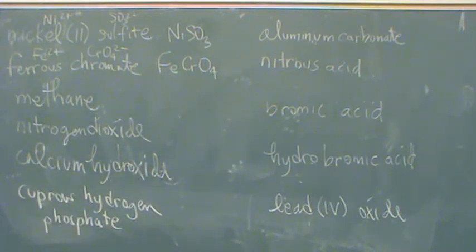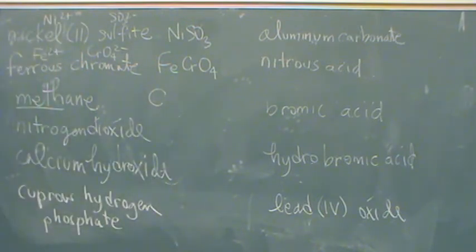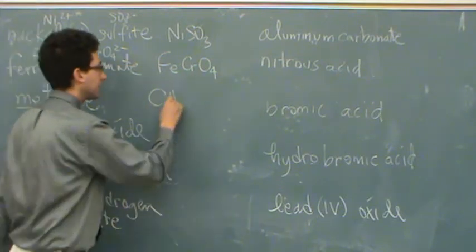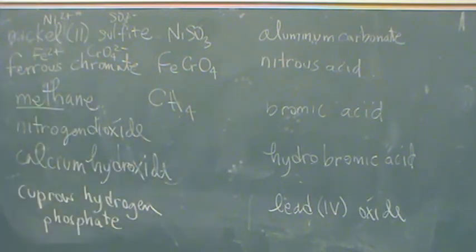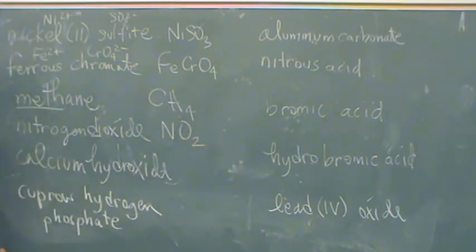Methane. That's an organic. Meth means how many carbons? One. How many bonds are there to carbon? Four. CH4. Nitrogen dioxide, there's no metal here. You see the di or anything like that, tri, etc. This is indicating that it's molecular. So it's one nitrogen, two oxygens. No charge to balance here.